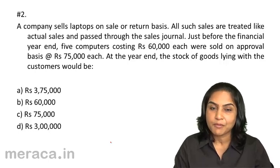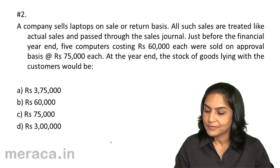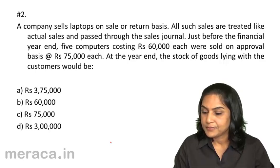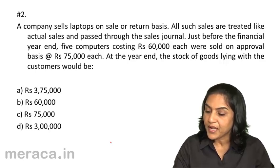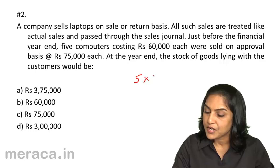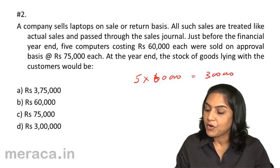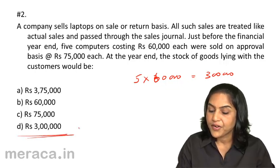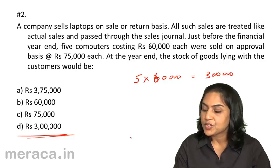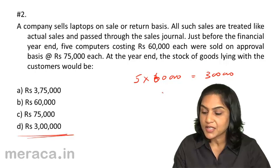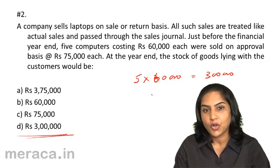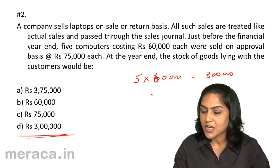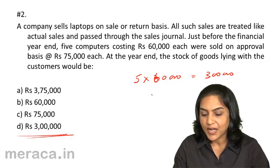You could pause the video to make the computations. The right answer in this case would be 5 computers costing Rs. 60,000 each — Rs. 3 lakh should be the value of the closing stock lying with the customers. Therefore, the right answer would be 2G. Please note that we have taken 5 computers at the cost price of Rs. 60,000 since the sale price was Rs. 75,000. We take cost or sale value, whichever is lower, to value stock. So 5 computers into Rs. 60,000 equals Rs. 3 lakh, being the correct answer.